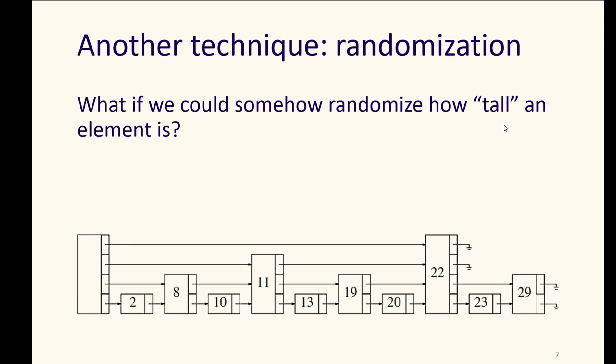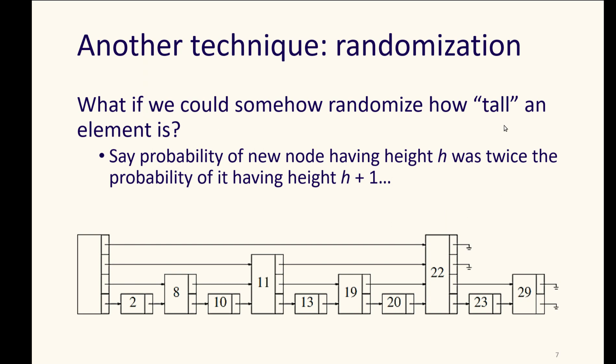So, another thing we could do is to randomize what level of pointer an element gets, or rather whether an element gets a higher level pointer or stays at the lower level. We could say that the probability of a new node having a height h is twice than the probability of having the height h plus one.